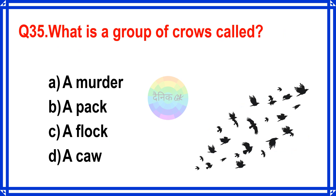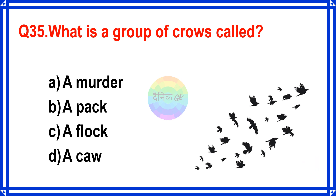What is a group of crows called? The correct answer is Option A. A murder.